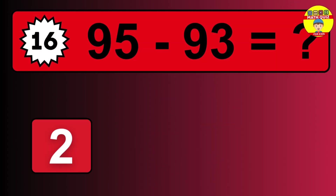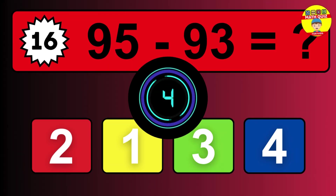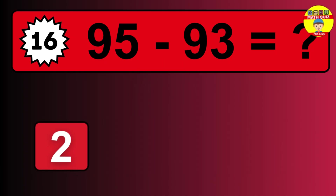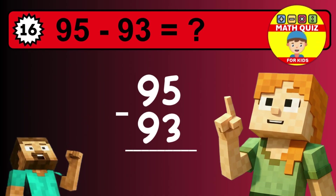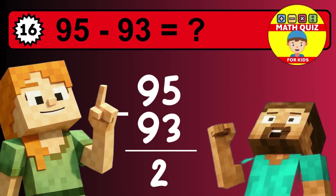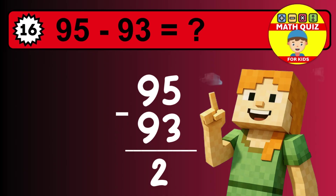What is 95 minus 93? Time to think. Let's solve this step by step. We start with the units: 5 minus 3 is 2. Then we go to the tens: 9 minus 9 is 0. The final answer is 2.